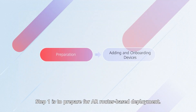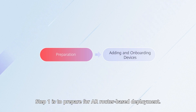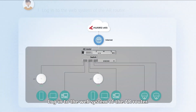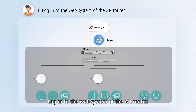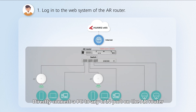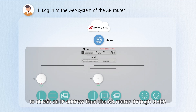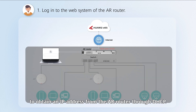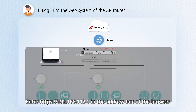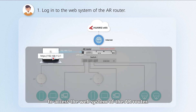Prepare for AR router-based deployment by logging in to the web system of the AR router. Directly connect a PC to any LAN port on the AR router to obtain an IP address from the AR router through DHCP. Then enter 192.168.112.1 in the address box of the browser to access the web system of the AR router.